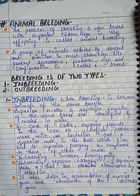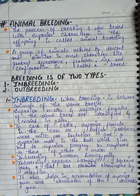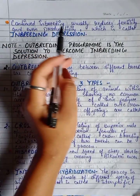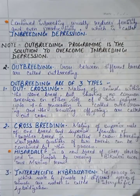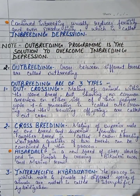Inbreeding helps in accumulation of superior genes and elimination of less desirable genes — we differentiate and keep the superior genes while eliminating the less desirable ones. However, continued inbreeding usually reduces fertility and even productivity, which is called inbreeding depression.